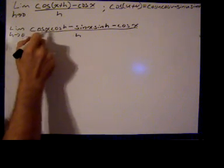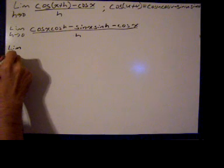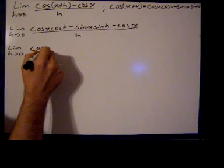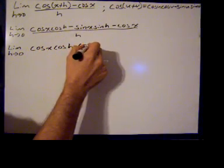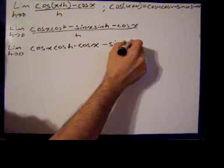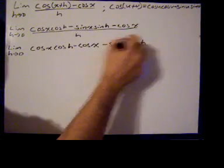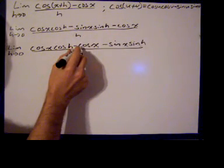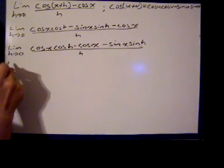Now I have a cosine of x here and a cosine of x here, so I'm going to rewrite with those grouped together. So the limit as h goes to zero of the cosine of x times the cosine of h minus the cosine of x minus the sine of x times the sine of h, all divided by h. Now I'm going to factor out a negative cosine of x.